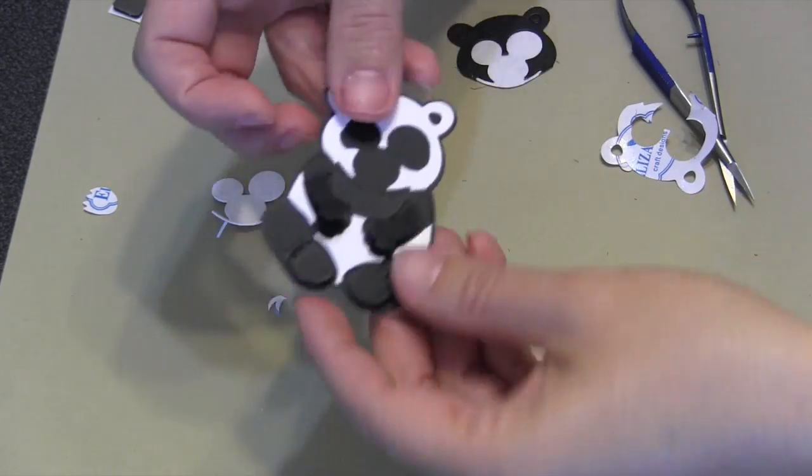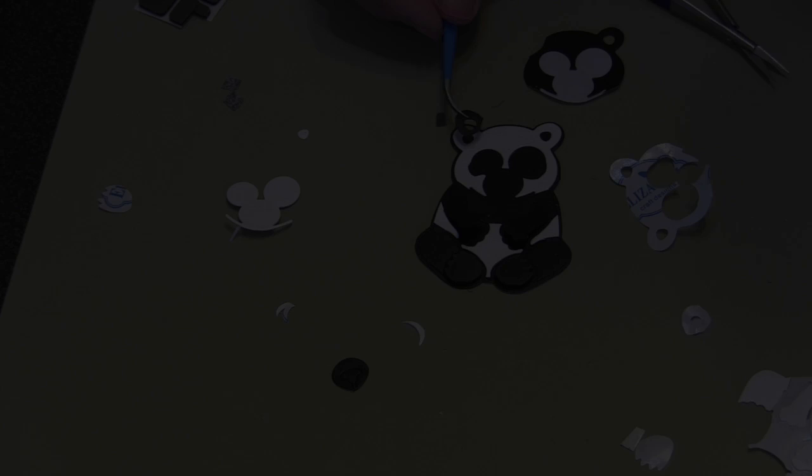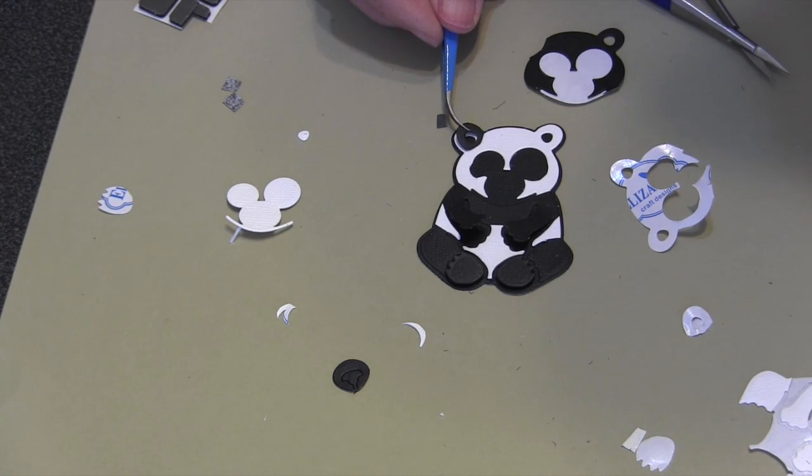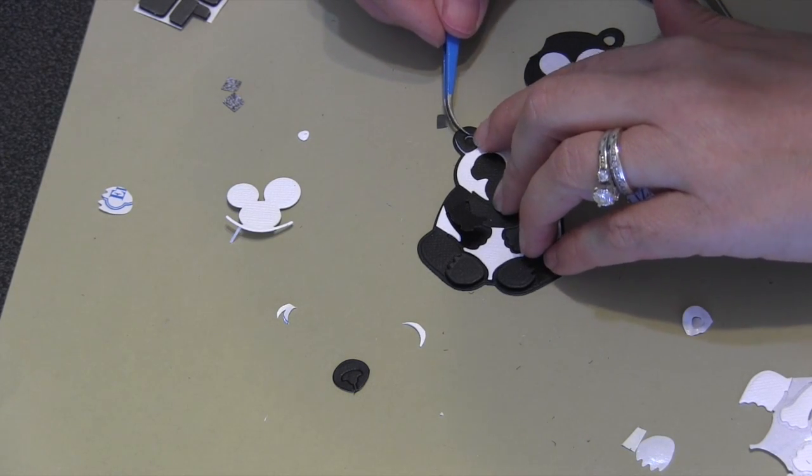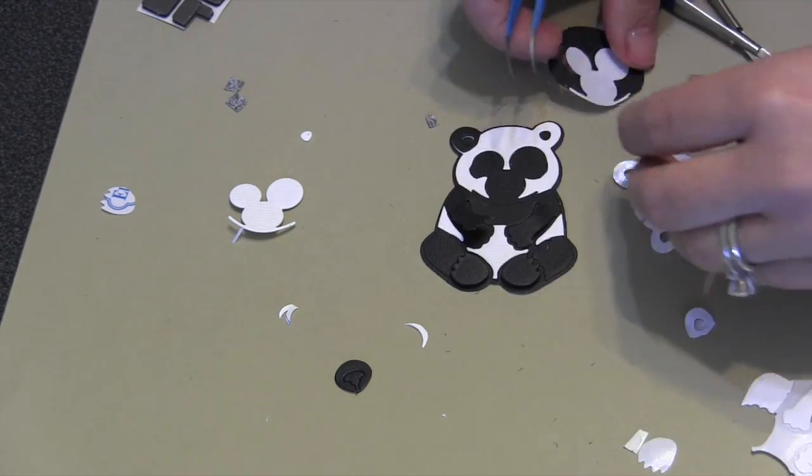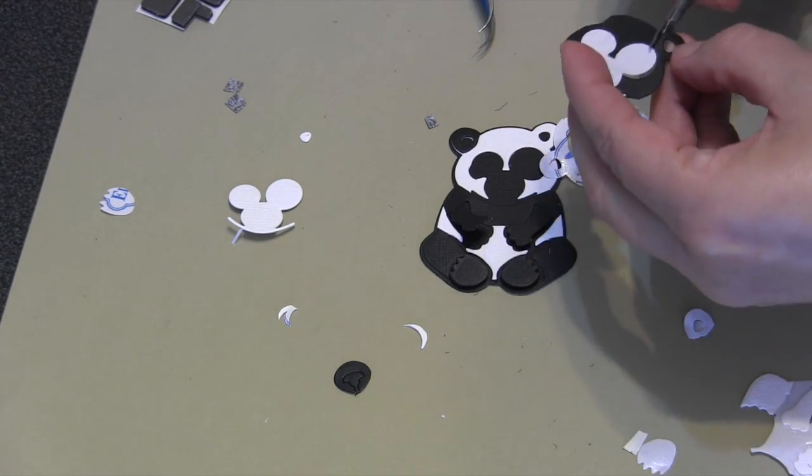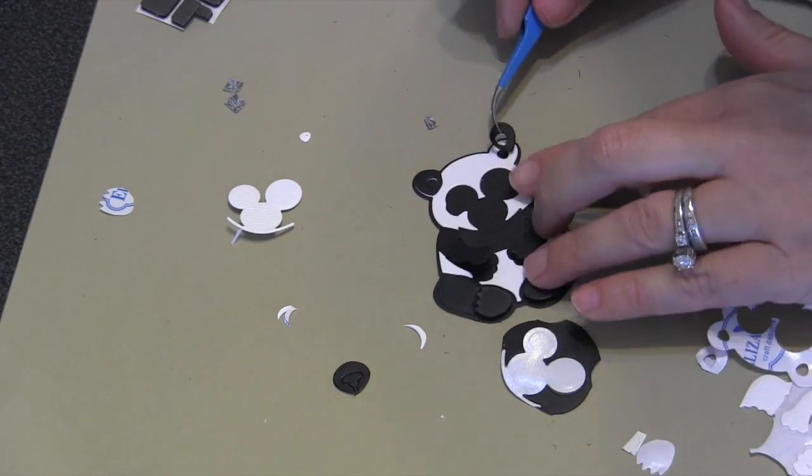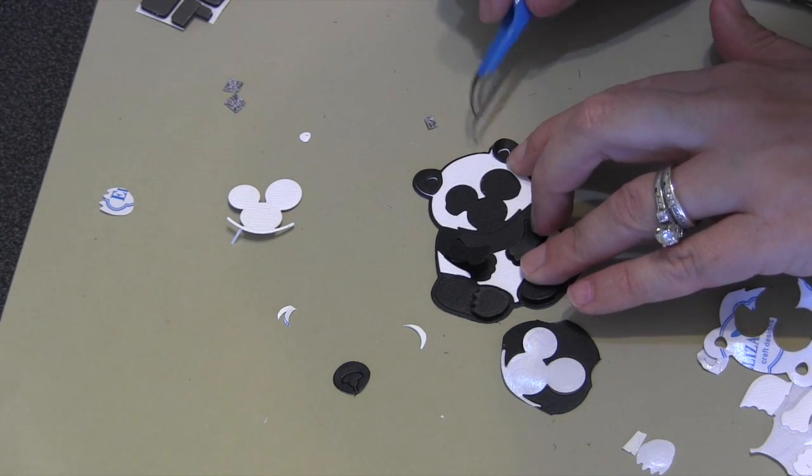The only part of the black head I'm going to use are the ears. I just went in there with the detail scissors and snipped out his ear. Because it has the double-sided adhesive behind it, I can just peel up the liner and stick those right on the white ones.